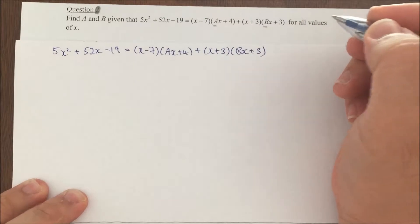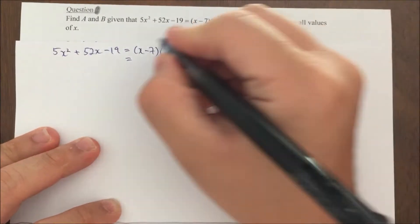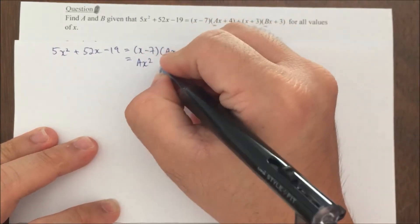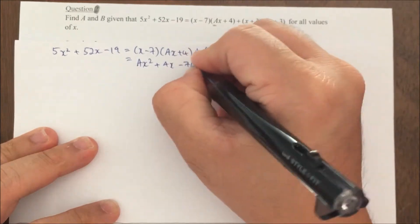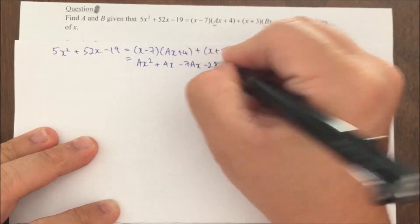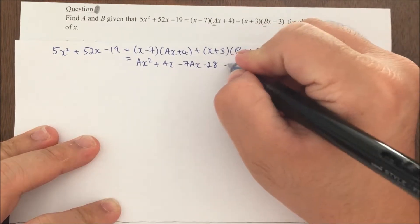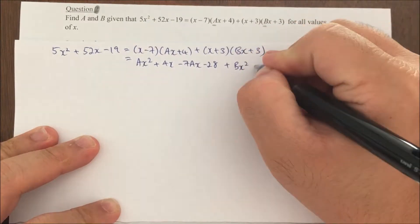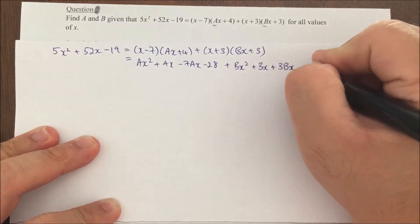So this is my question. Now on the right hand side, I have to expand it out. When I expand it out, I have ax squared plus 4x minus 7ax minus 28. For my next one, I will expand it out again. I will have bx squared plus 3x plus 3bx plus 9.